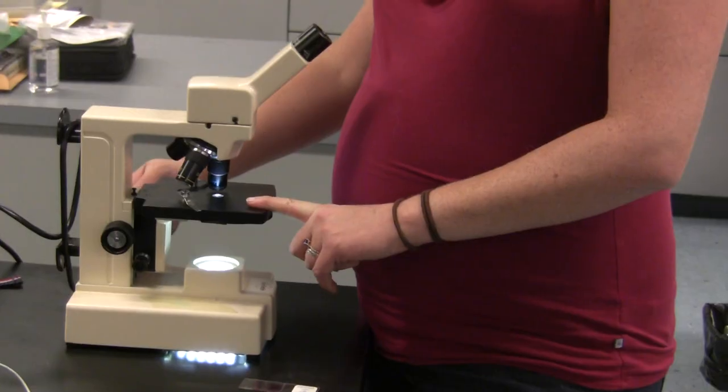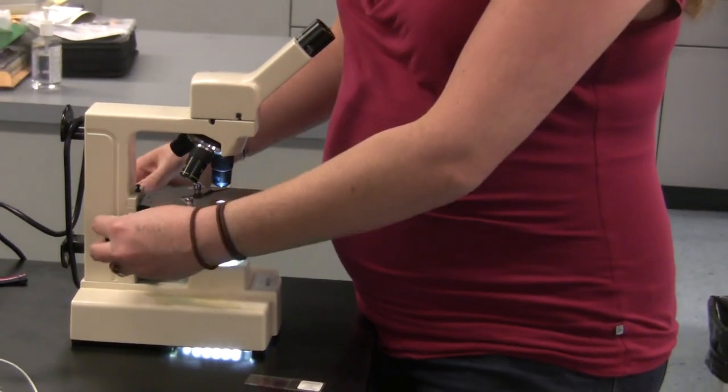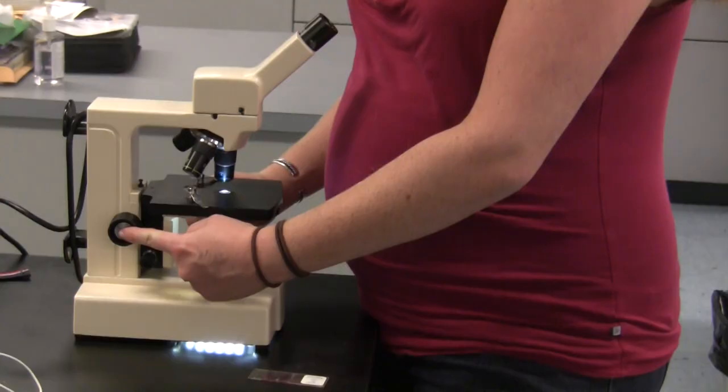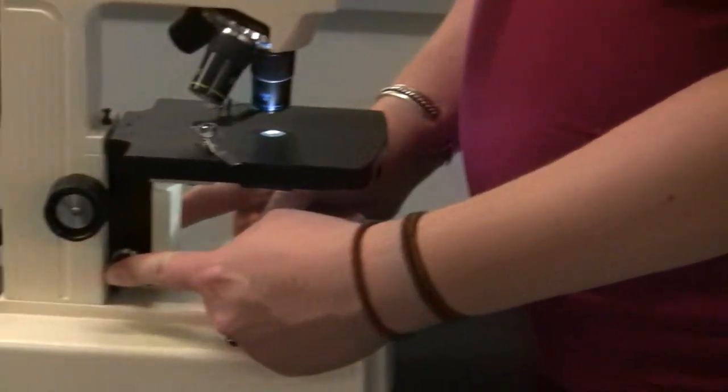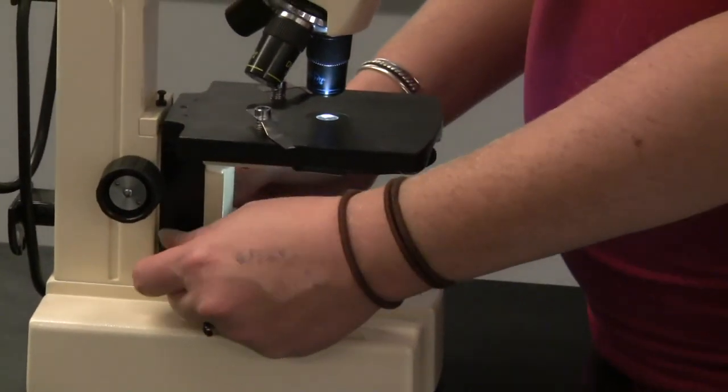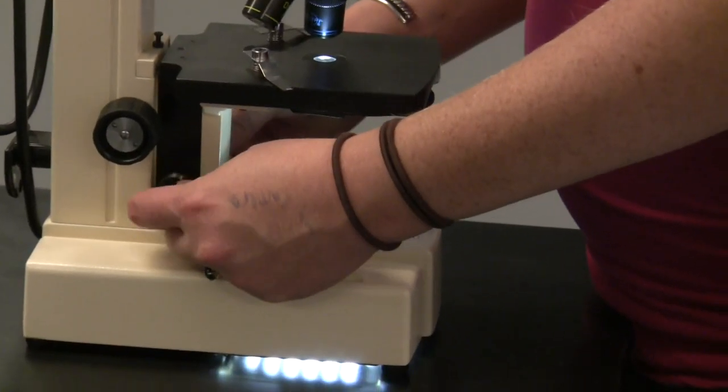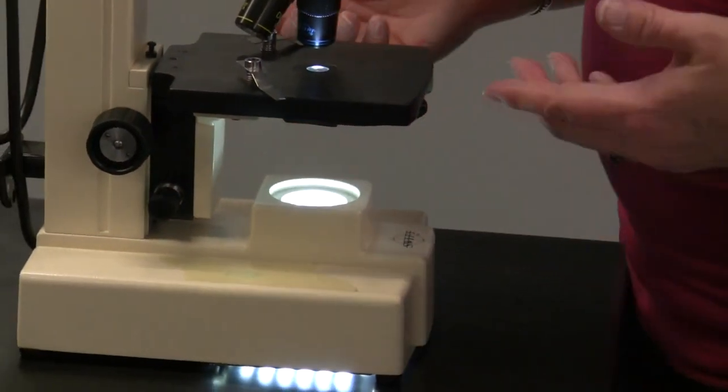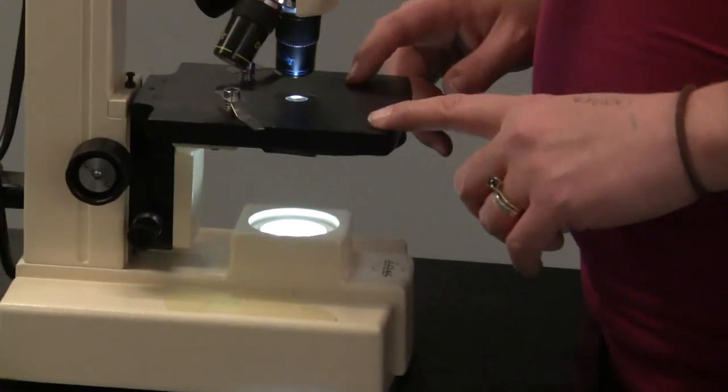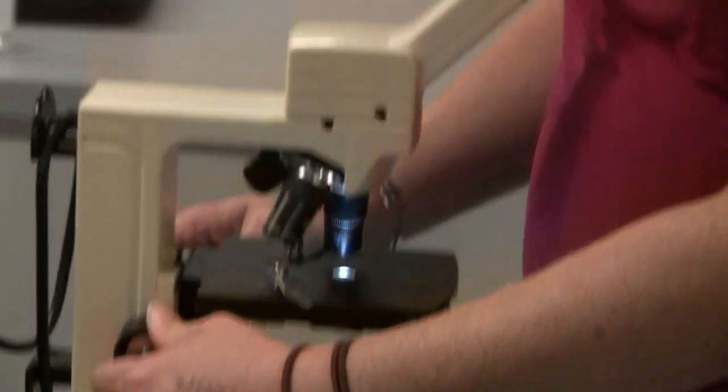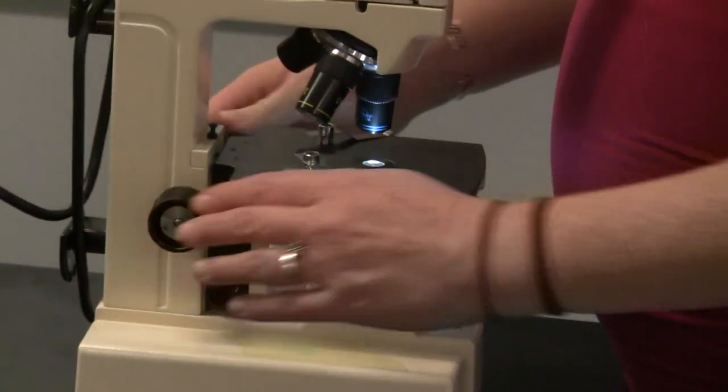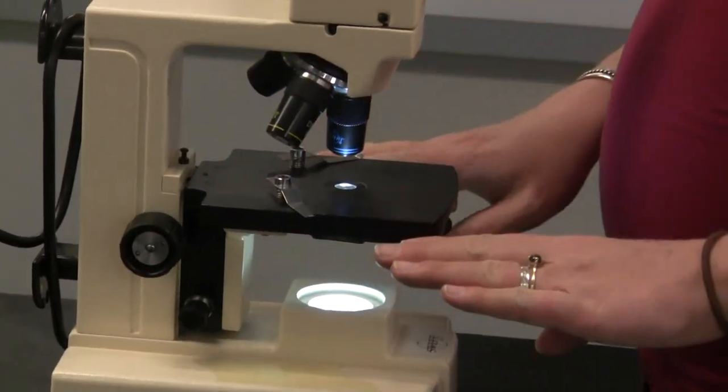So the stage goes up or down based on these knobs. We have our coarse adjustment knob and the fine adjustment knob. The fine adjustment knob is so small and has slight changes that it's honestly even hard to tell that the stage is moving. So it's best to start by using the coarse adjustment knob and lower it as far as it will go.